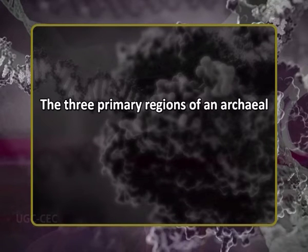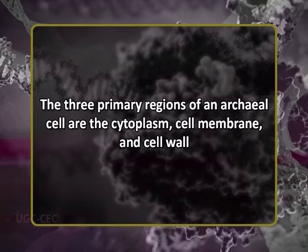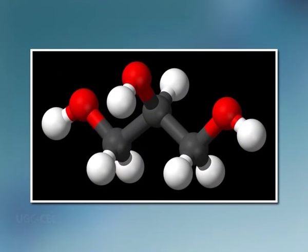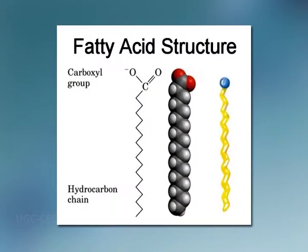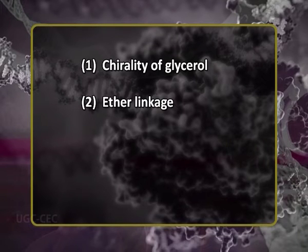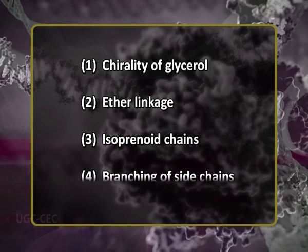Let us know about the basic archaeal structure. The three primary regions of an archaeal cell are the cytoplasm, cell membrane, and cell wall. Archaeal cell membranes are chemically different from all other living things, including a backwards glycerol molecule and isoprene derivatives in place of fatty acids. There are four fundamental differences between the archaeal membrane and those of all other cells: chirality of glycerol, ether linkage, isoprenoid chains, and branching of side chains.